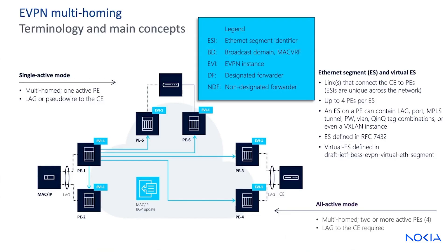Terminology and main concepts. There are always new acronyms to learn in every technology. Most people know the terminology of the PE and the CE — these are the DMARC devices of the provider edge and customer edge of the network respectively. We have an ESI, or Ethernet segment identifier, which is the attachment circuit into the EVPN from the PE to CE. We have a broadcast domain, which is a BD or MAC VRF, an EVI (EVPN instance), DF or designated forwarder, NDF or non-designated forwarder. The Ethernet segment and virtual Ethernet segment are the links that connect the CE to the PE, and the Ethernet segment identifier is unique across the network.